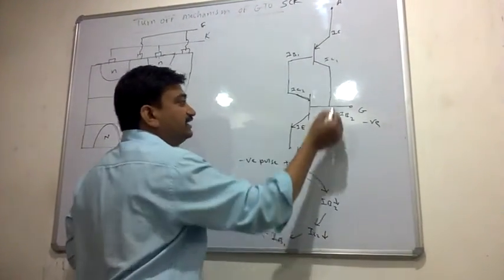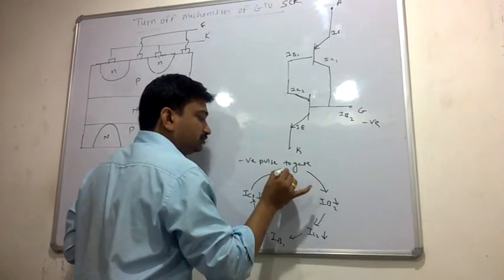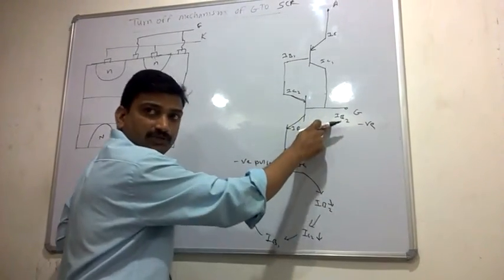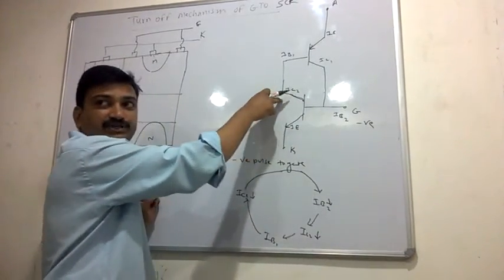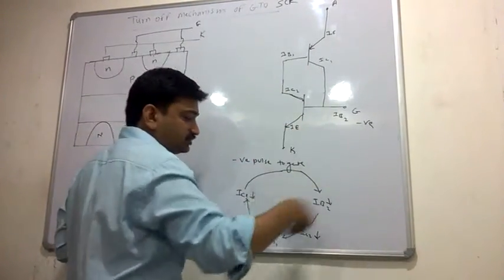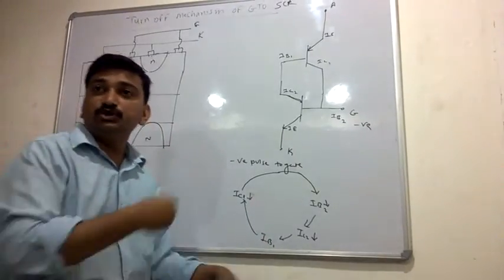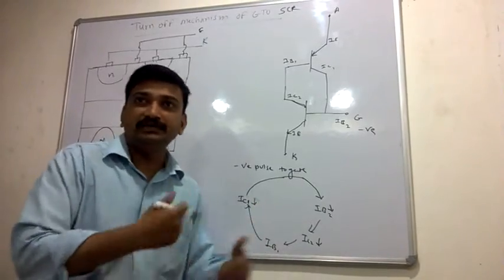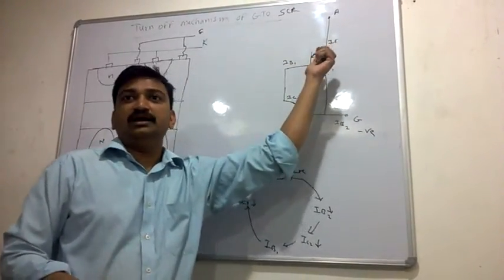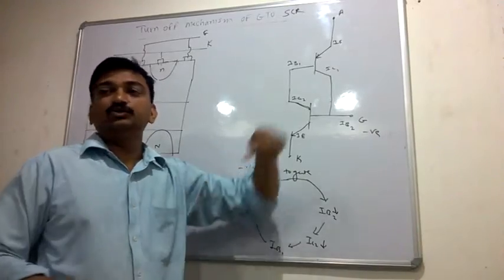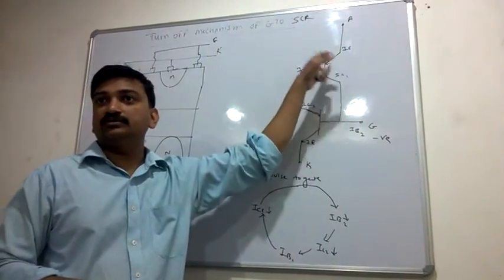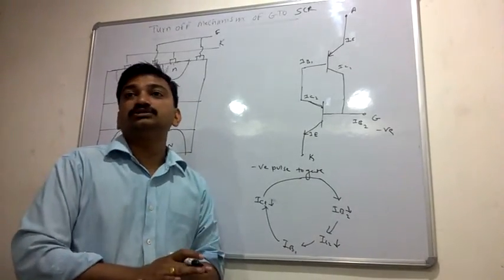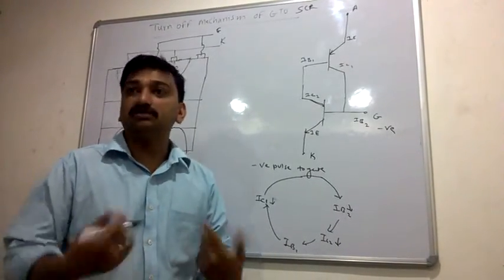As IC1 decreases, IB2 decreases. As IB2 decreases, IC2 decreases. This process becomes cumulative — one by one the currents keep reducing — and at a certain level the anode current reaches zero and the GTO SCR gets turned off.